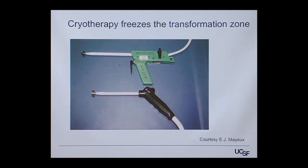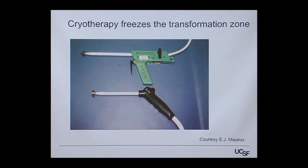Cryotherapy is the most common treatment used globally. It's very effective, low-resource, and easy to perform without surgical training. A machine attached to liquid carbon dioxide delivers CO2 to the tip, which is applied to the abnormal cervix, freezing and killing the abnormal cells. They slough off and normal cells replace them. The treatment has about an 80–90% cure rate and is well tolerated in-office with the patient awake.